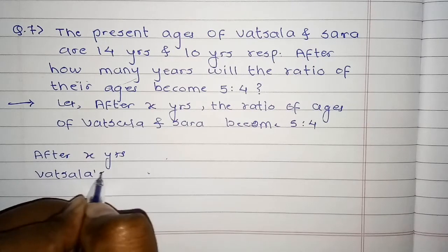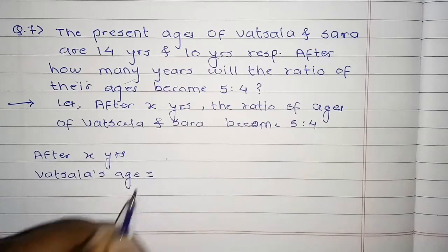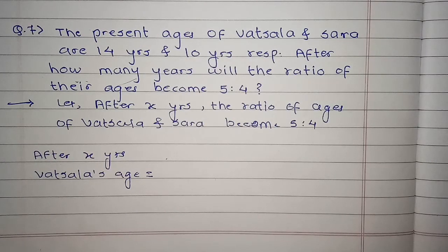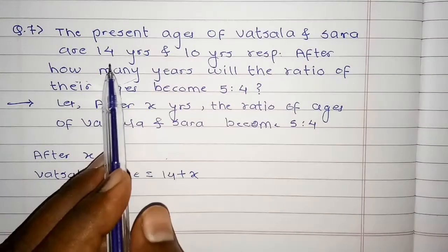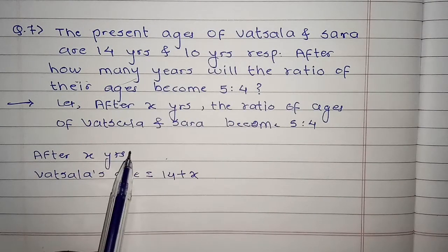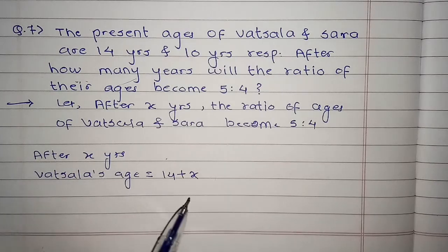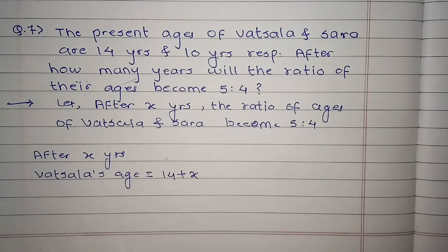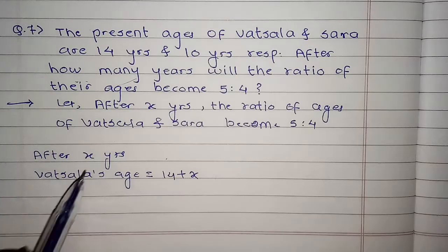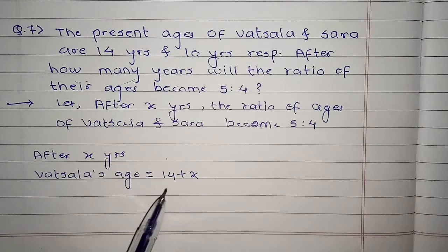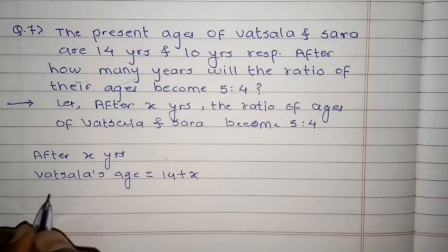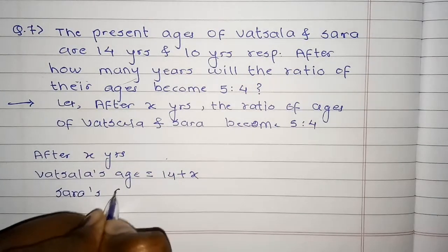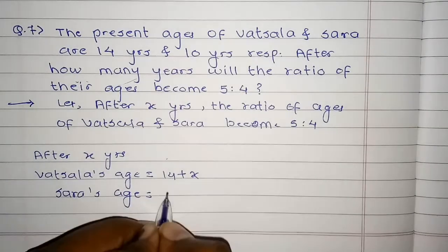After X years, Vassala की age क्या बनेगी? 14 plus X. क्योंकि Vassala की present age है 14 years, और after X years बोला है तो उसमें X years add हो जाएंगे। जैसे अगर किसी की आज की age 20 years है तो 3 years बाद उसकी age 23 होगी, वैसे ही Vassala की age होगी 14 plus X. And similarly, Sara की age हो जाएगी 10 plus X.